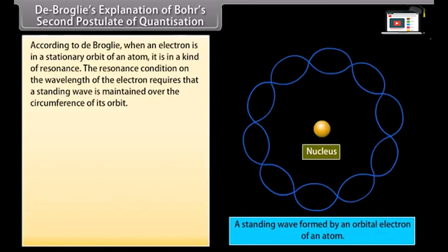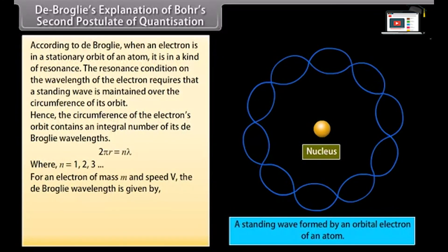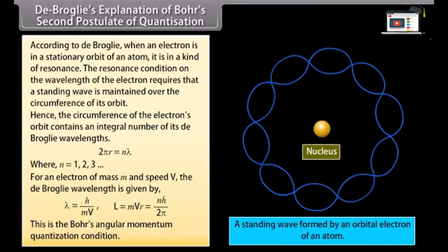De Broglie's explanation of Bohr's second postulate of quantization: De Broglie explained the quantization condition on angular momentum of an orbiting electron. According to De Broglie, when an electron is in a stationary orbit of an atom, it is in a kind of resonance. The resonance condition requires that a standing wave is maintained over the circumference of its orbit. Hence the circumference of the electron's orbit contains an integral number of its de Broglie wavelengths: 2πr = nλ, where n = 1, 2, 3, ... For an electron of mass M and speed V, the de Broglie wavelength is h/MV, giving MVR = Nh/2π, which is Bohr's angular momentum quantization condition.